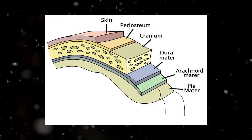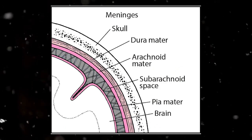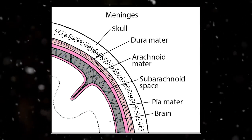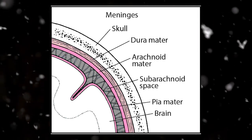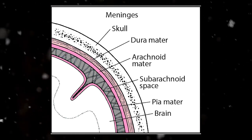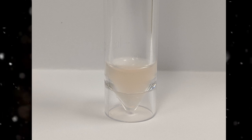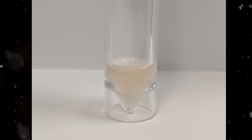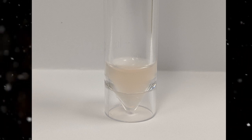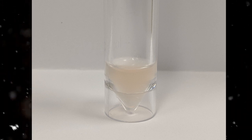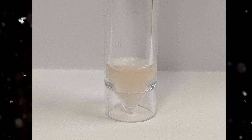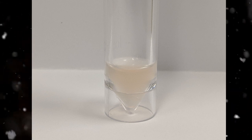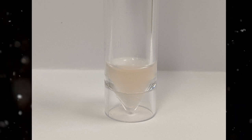Between these two layers is the sub-arachnoid space, which contains the cerebrospinal fluid. This fluid acts as a cushion for the brain and spine, whilst also providing nutrients. The fluid contains glucose, proteins, and a small number of white blood cells — normally 5 per cubic microlitre.